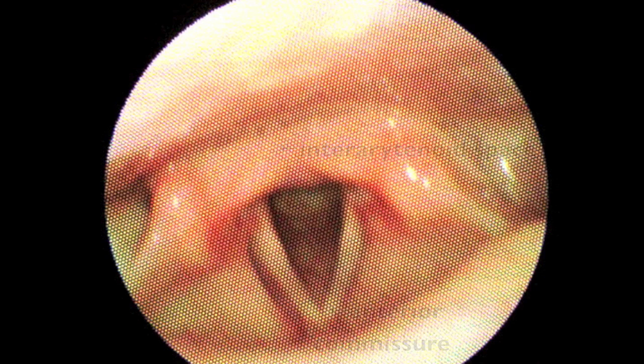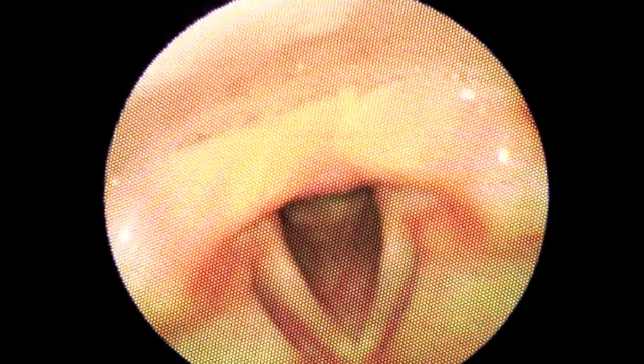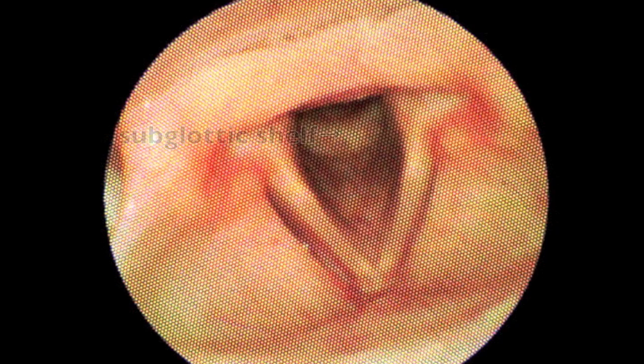By continuing to advance the endoscope to the post-swallow position, you will be able to observe the anterior trachea and the subglottic shelf.